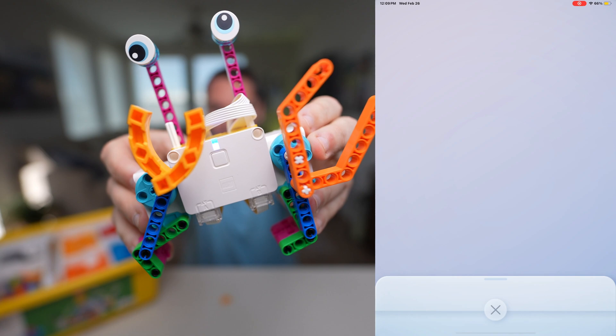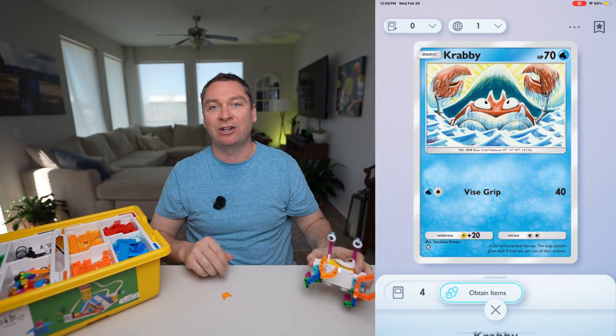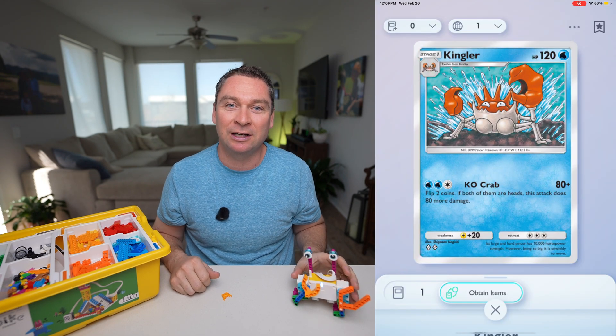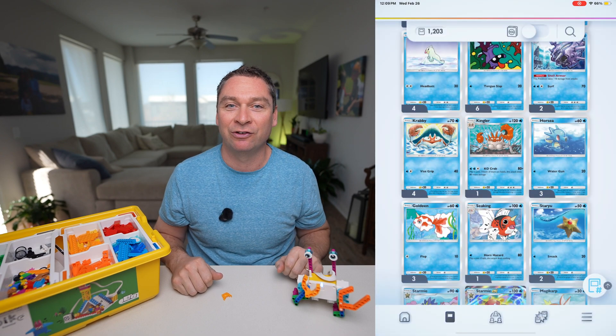This is a Generation 1 crab Pokemon called Krabby. We're going to be giving you step-by-step directions on how to build him, how to code him, and then we're going to give you a challenge on ways to upgrade to a Kingler as well as the other forms.